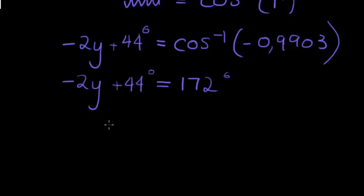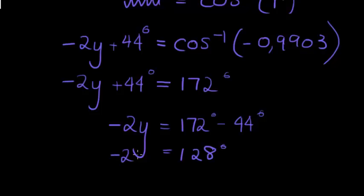So I get negative 2y is equal to 172 degrees minus 44 degrees, which means this is 172 minus 44 is 128 degrees. So negative 2y is equal to 128. Obviously I divide with negative 2, and what do I get as my answer?